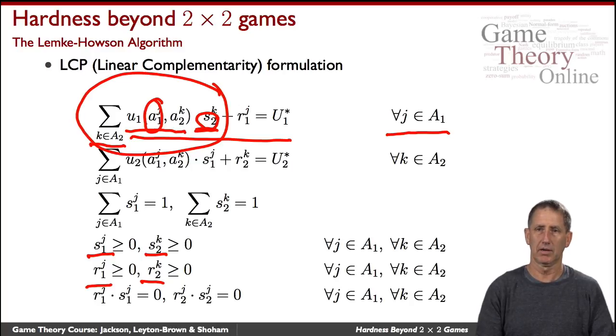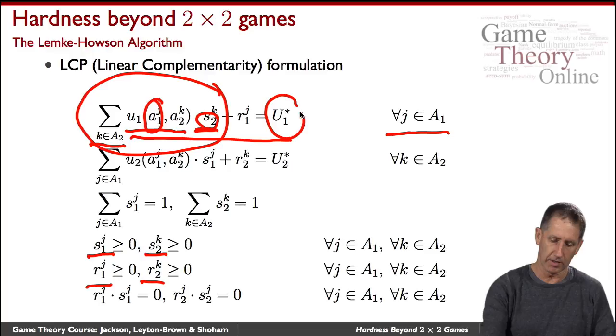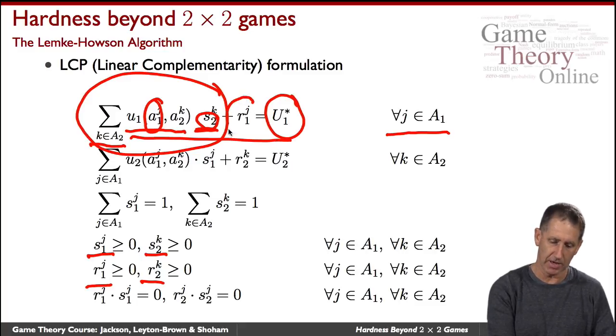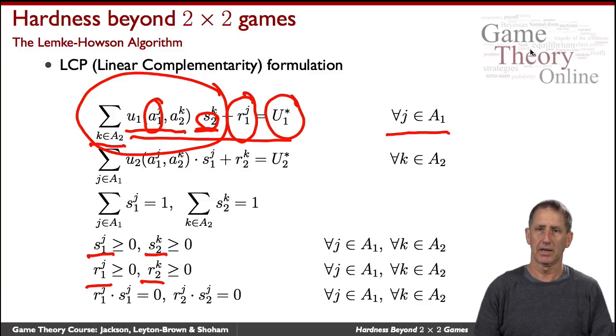If we look at this sum as a whole, this is the expected payoff for player one when playing strategy j, given that player two is playing a certain mixed strategy s2. In general, if you look at all the actions that player one plays, they will give different payoffs. What we want is for player one to best respond to that strategy of player two, because in equilibrium every player is best responding to the other. Let's call U star one the payoff to player one in the Nash equilibrium. In general, the payoff for player one when they play action j will be no greater than the best response. So we add this slack variable that says how much player one is missing relative to their best response when they're playing strategy j.